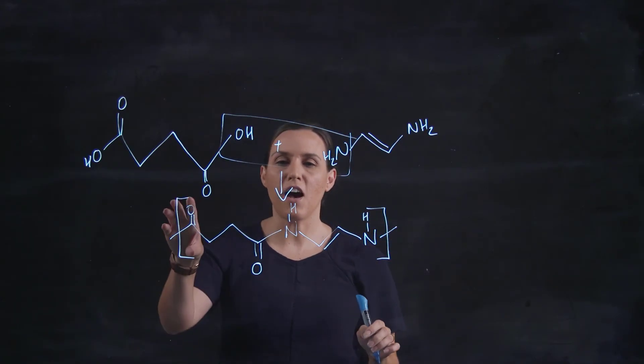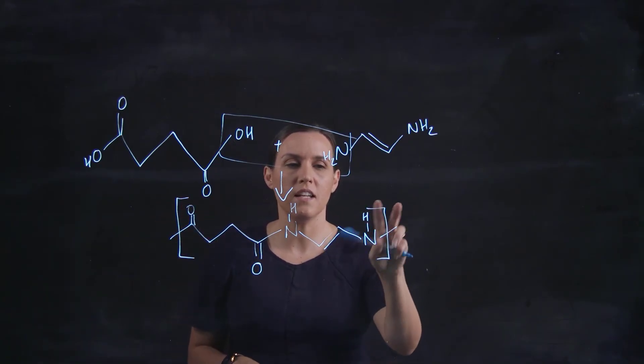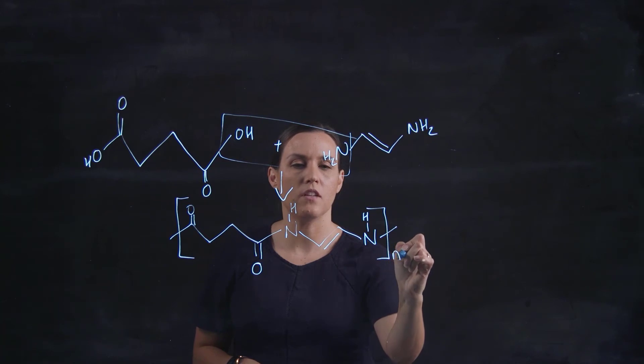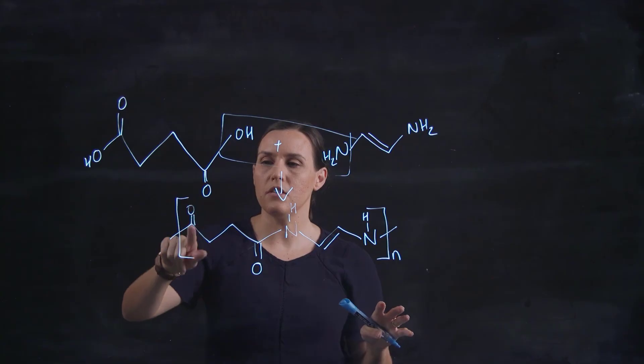So we draw half of the linking bond on one side and half on the other side and then we put that repeating unit. So just going back and checking it, so we've got our carbonyl.